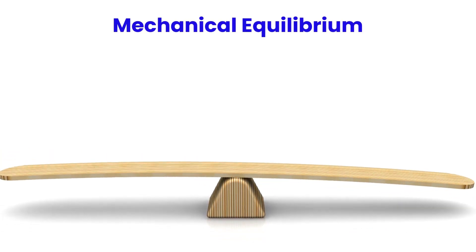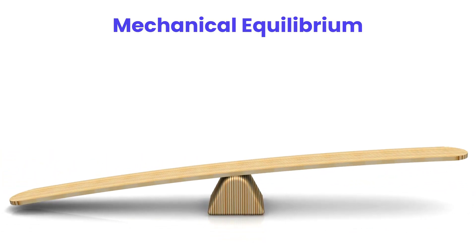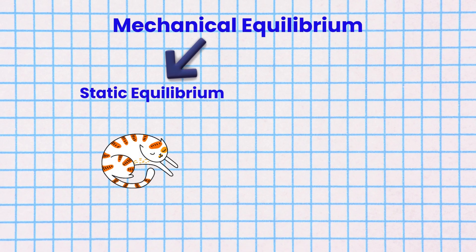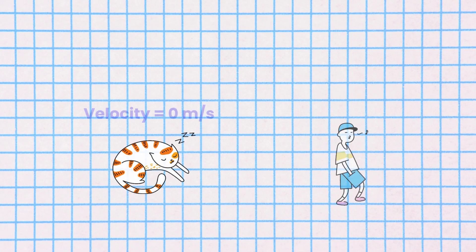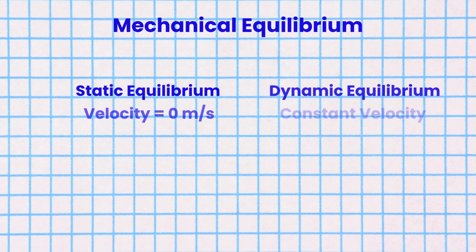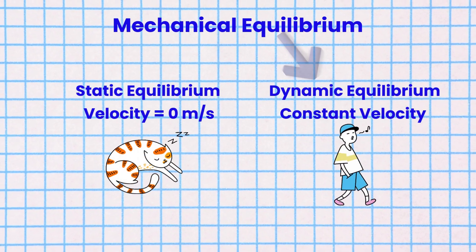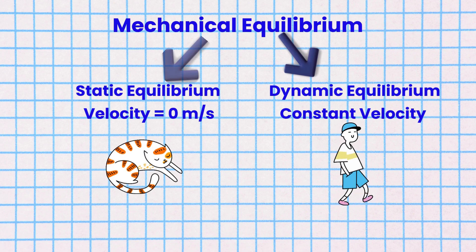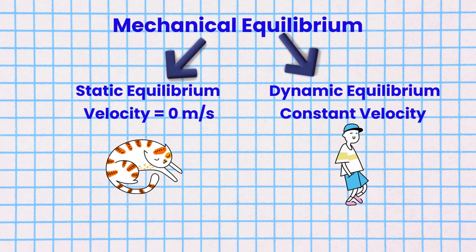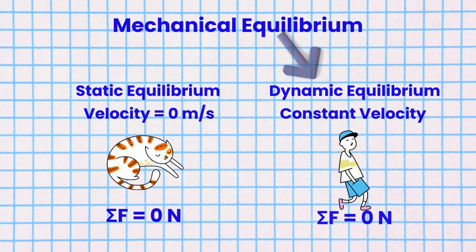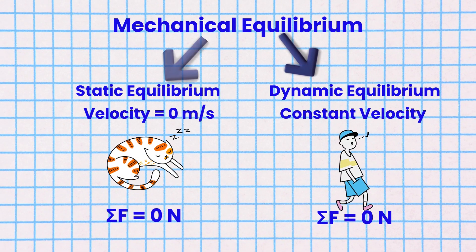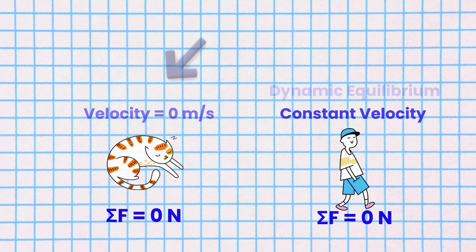Mechanical equilibrium can be classified as static equilibrium and dynamic equilibrium. Static equilibrium is when objects are at rest, and dynamic equilibrium is when objects are moving at a constant velocity. This is possible only when the net force equals zero newtons.